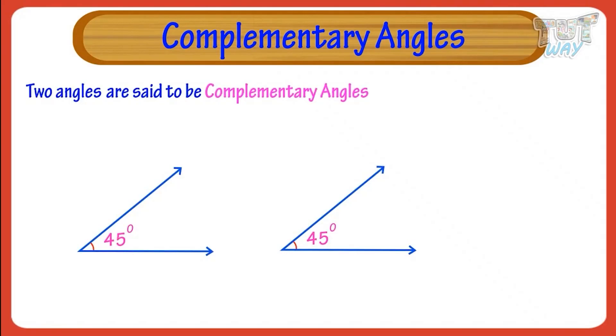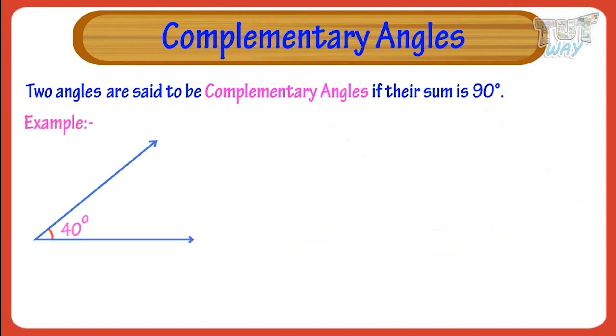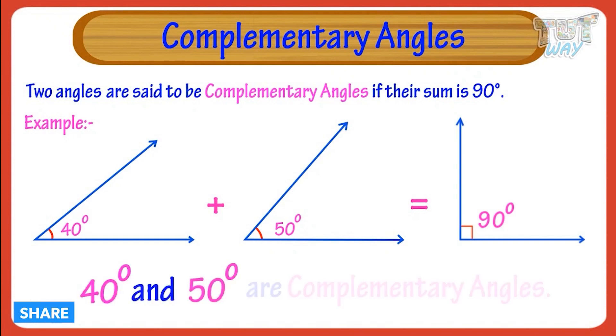Complementary angles, if their sum is 90 degrees. 40 degrees plus 50 degrees equals 90 degrees. So, 40 and 50 are complementary angles.